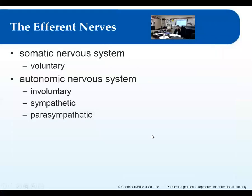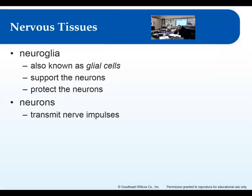So: somatic nervous system is voluntary; autonomic is involuntary, broken up into sympathetic and parasympathetic. That concept map is also on page 197 — it's a great way to organize this so it's a little simpler to understand.